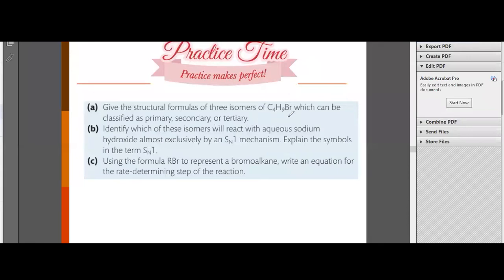Give the structural formula for three isomers C4H9Br which can be classified as primary, secondary, and tertiary. Let's draw C4H9Br. Give name. Every time we make the isomers, you should give name because otherwise you can make the same structure. This is 1-bromobutane, and this can be classified as primary. Now let's move the position of Br to this, 2-bromobutane. This is secondary.